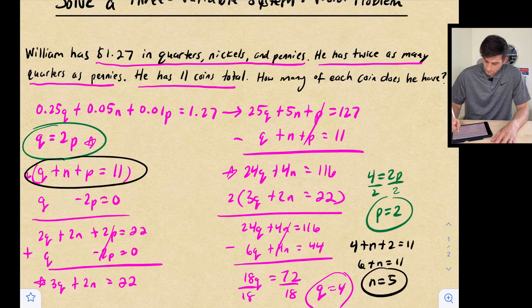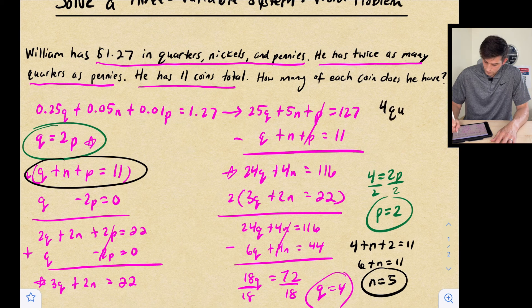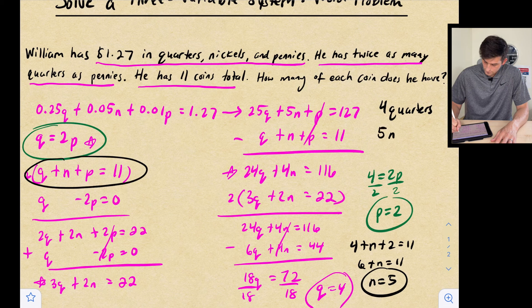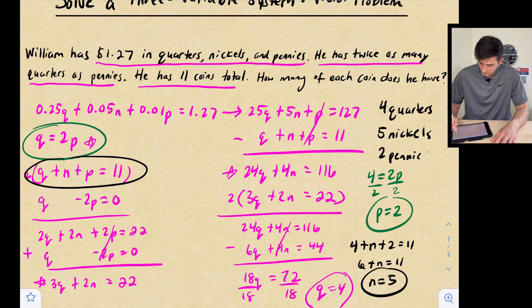So now our final answer, we have 4 quarters, we have 5 nickels. Or we don't have them. William has them. And we have 2 pennies.